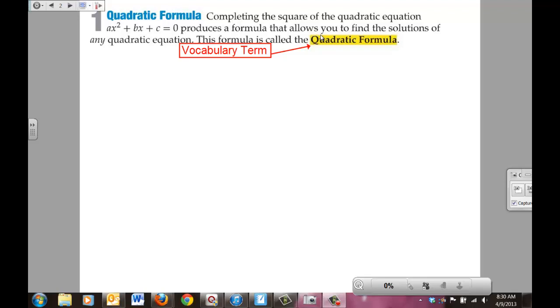Completing the square of a quadratic equation, ax² + bx + c = 0, produces a formula that allows you to find the solutions of any quadratic equation. This formula is called the quadratic formula, and yes, that is a vocab term.